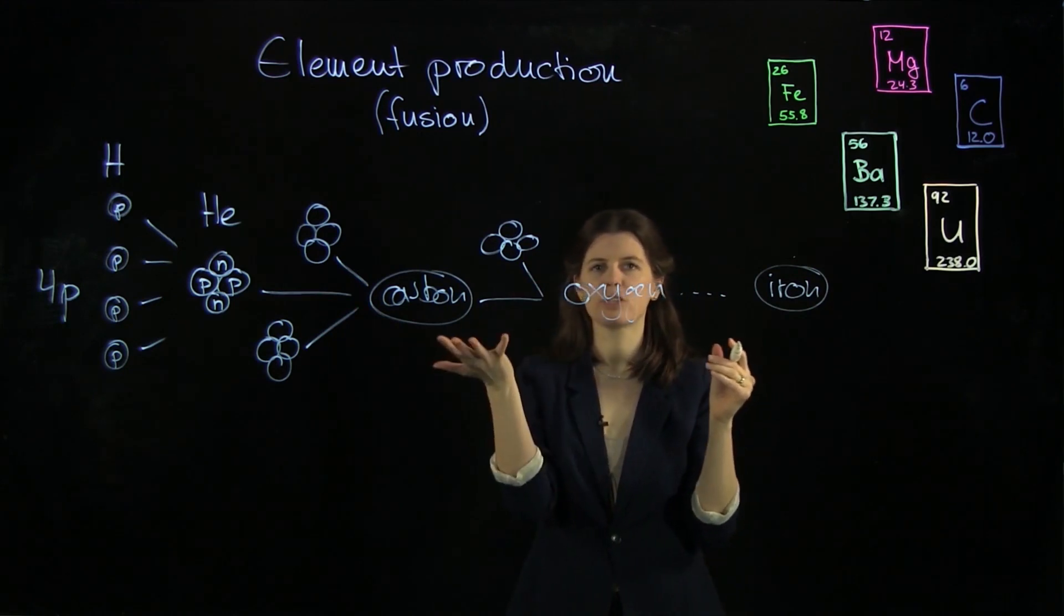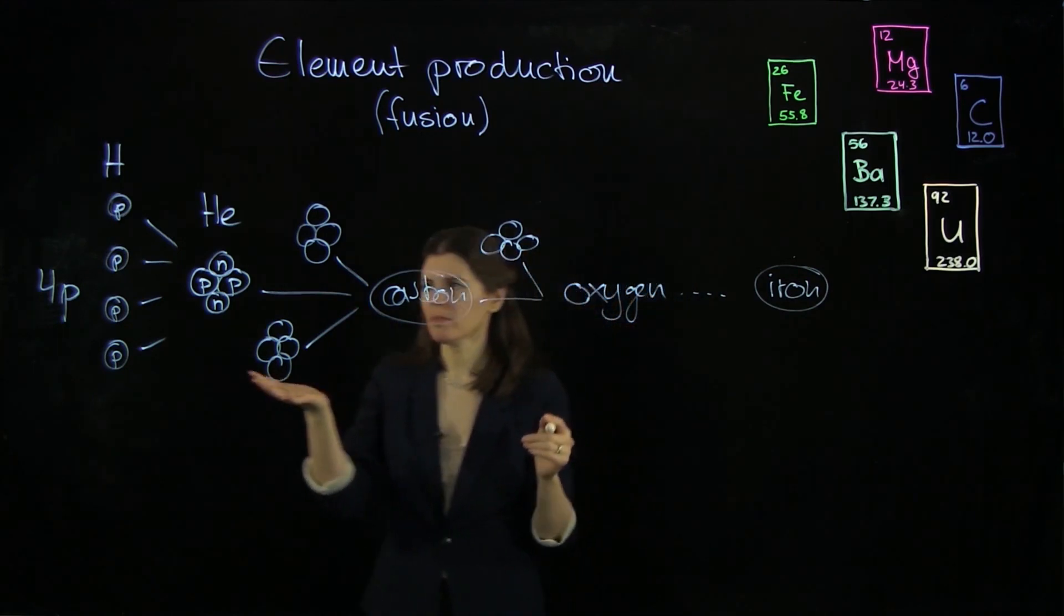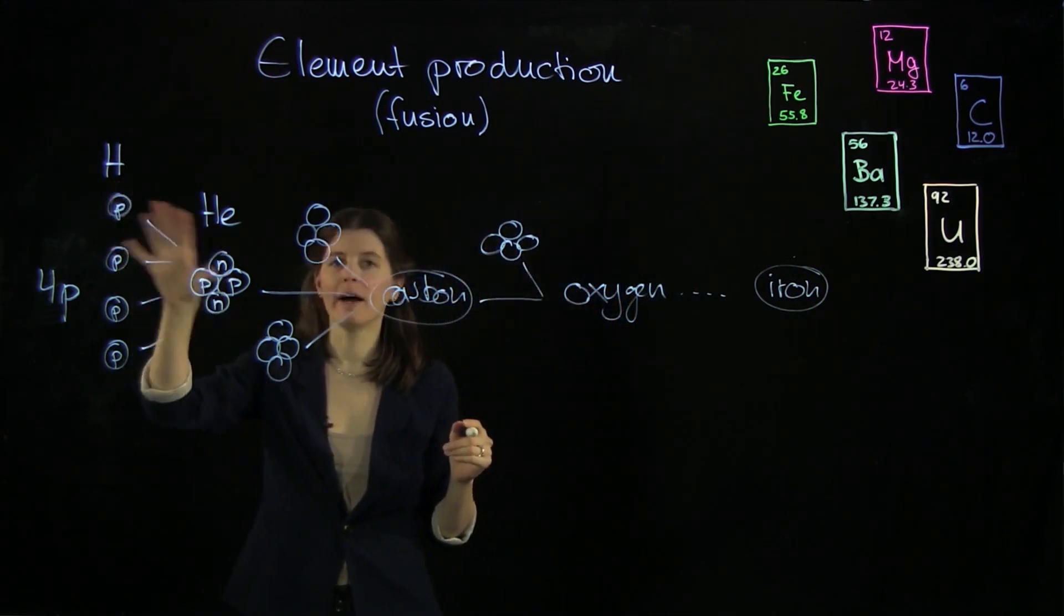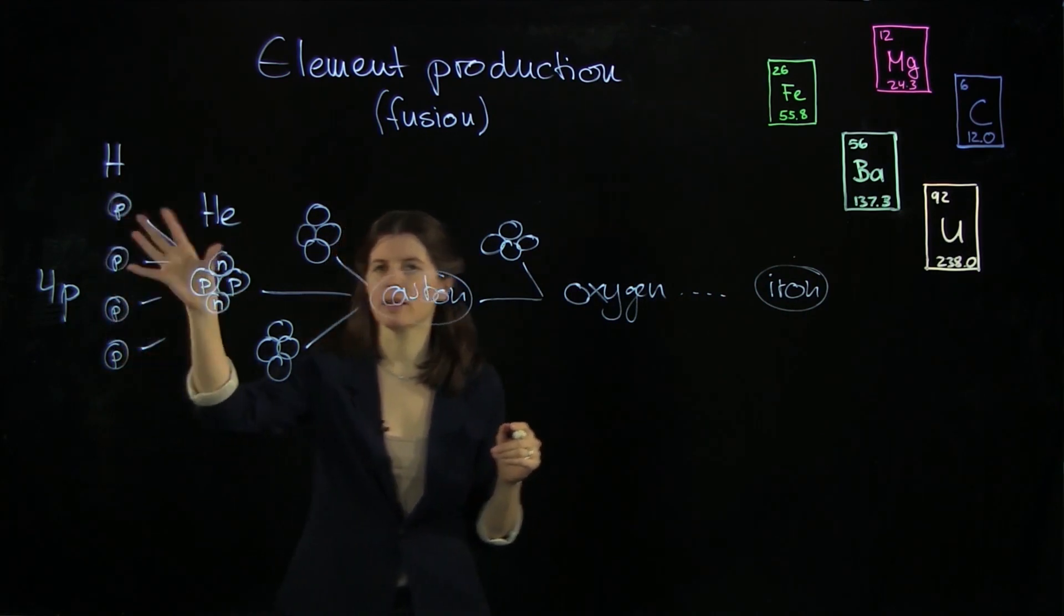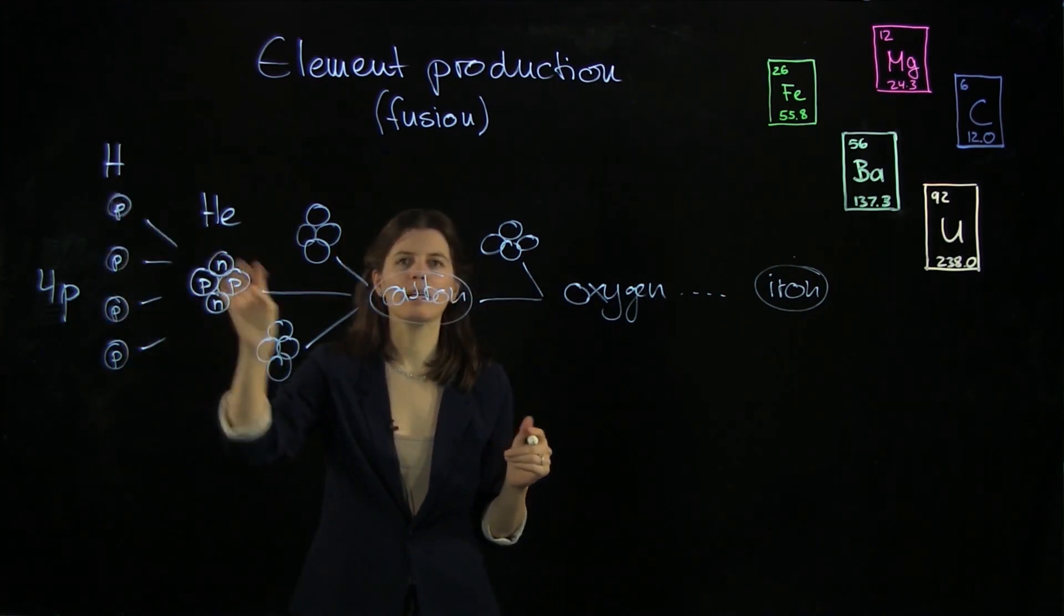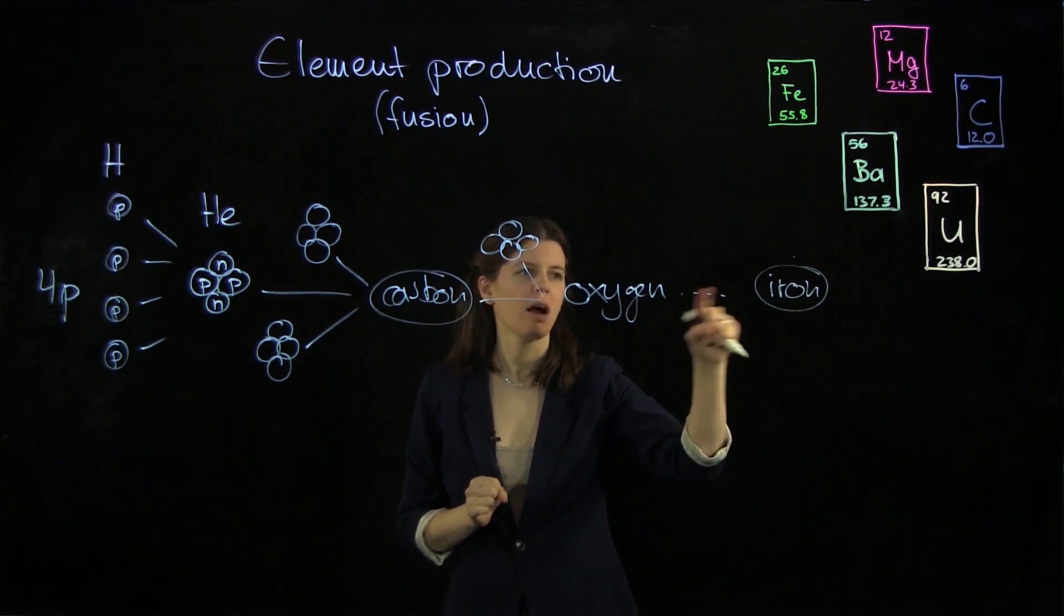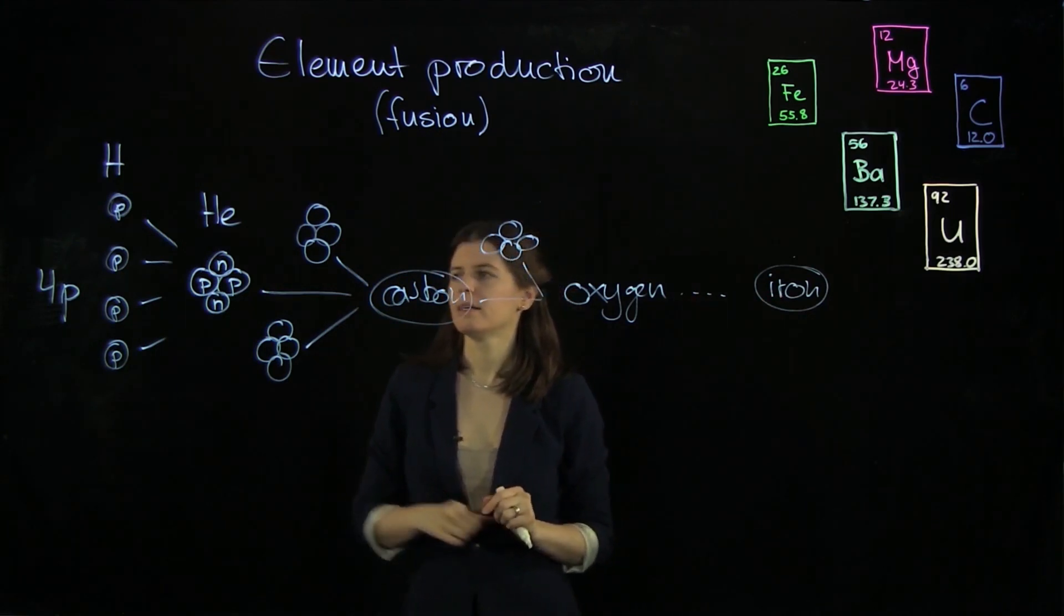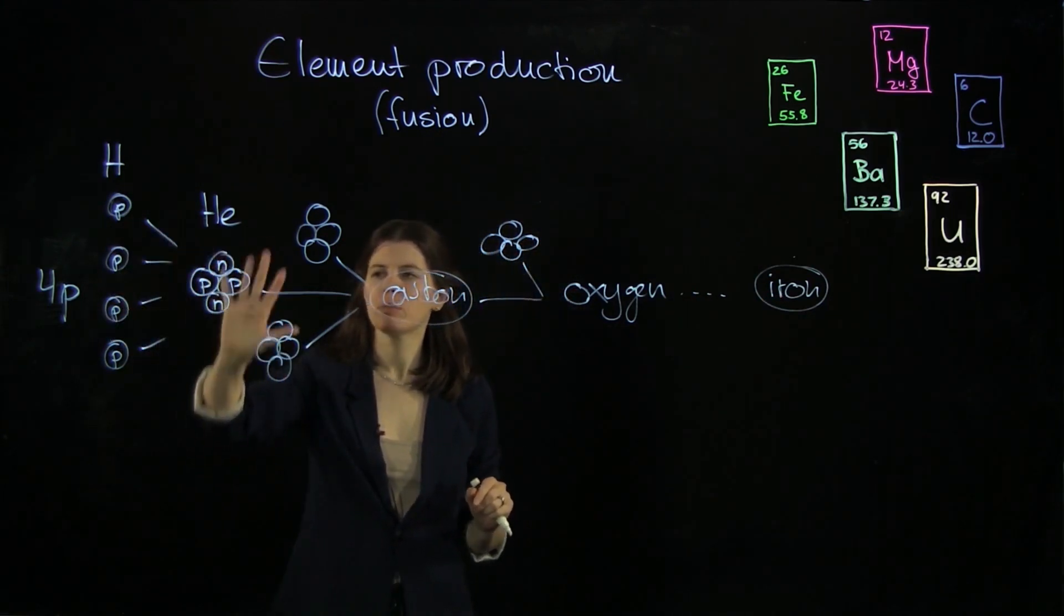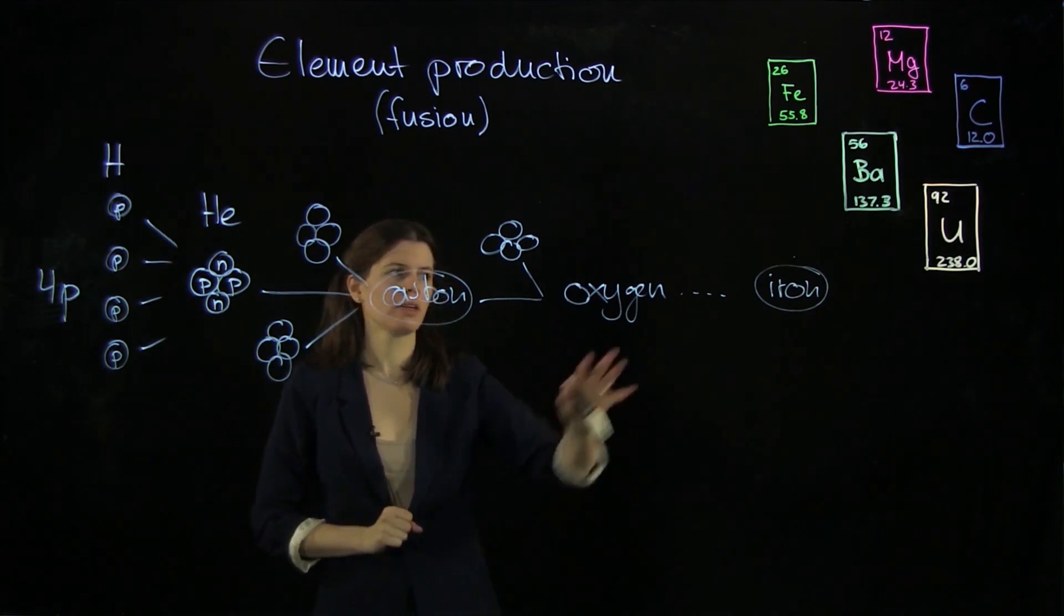Now, how does this help us understanding why the sun shines? As it turns out, these lightest nuclei here, they are less tightly bound than the big ones like iron. And that means we're going to get a little bit more energy out of this than that.